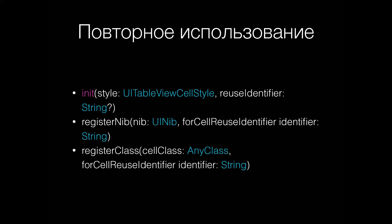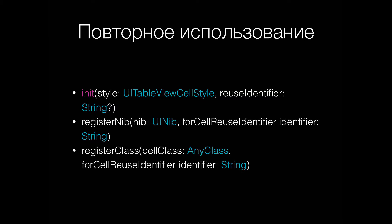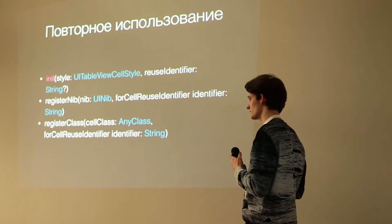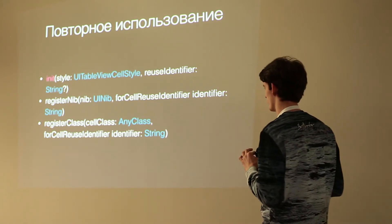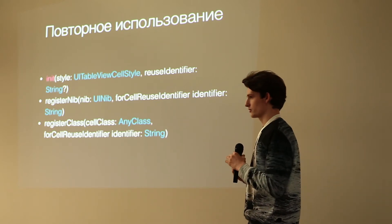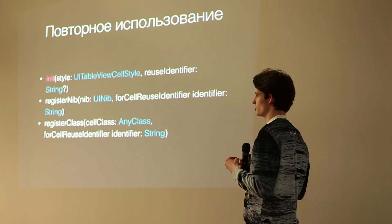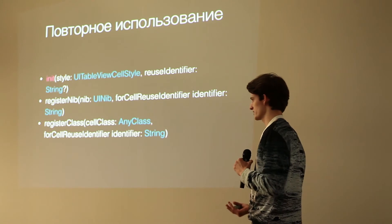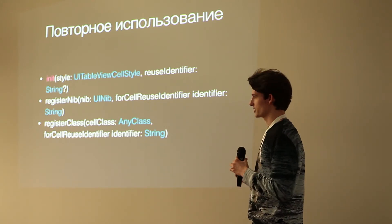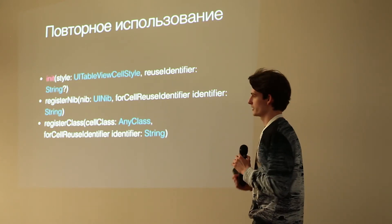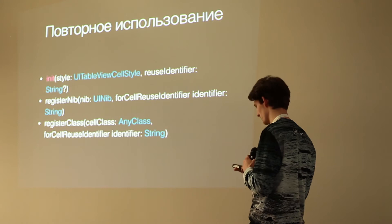Если мы хотим заставить ячейку закэшироваться, у нас есть три способа плюс один интерфейсный. Первый — вызвать dequeue с определённым идентификатором, и он сохранится для текущей ячейки. Другие два работают для случаев, если у вас есть xib или просто класс ячейки, созданные независимо. Для этого вы можете отправить в таблицу методы регистрации по xib либо по классу. Если ваша ячейка была создана прямо в storyboard, регистрация для повторного использования пройдёт моментально.